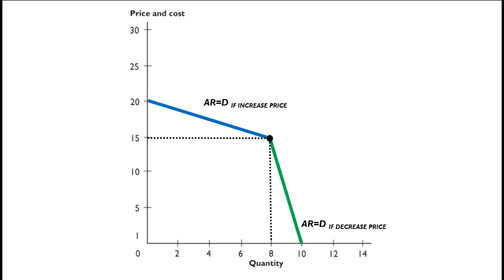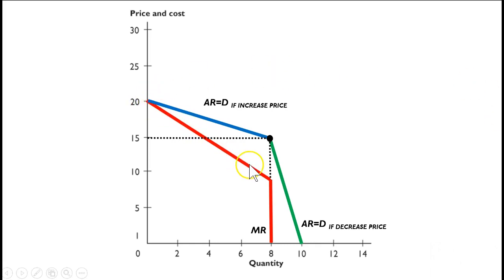What about the marginal revenue curve? Remember, for straight-line demand curves — or average revenue curves — the marginal revenue curve will have double the slope. If we draw in the marginal revenue curve for the upper blue portion of this kinked demand curve with double the slope, it is downward sloping until it comes to the kink point — the quantity at the kink point. At that particular point, the marginal revenue curve becomes discontinuous, and for our purposes we can say it is vertical. So we get this odd-shaped marginal revenue curve — this is the marginal revenue curve that Paul Sweezy drew in 1939.